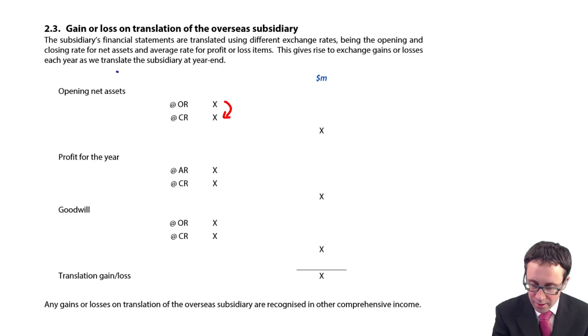Similarly, the profit for the year was at the average rate in the statement of profit or loss, but is now within your statement of financial position at the closing rate. So we can look at what it was compared to what it now is to get the movement and therefore the gain or loss. And then don't forget as well, you've also got your goodwill.